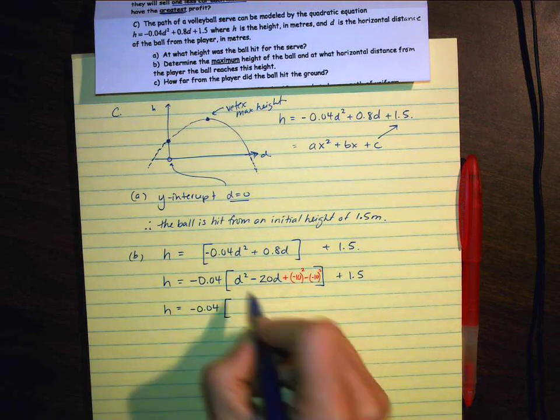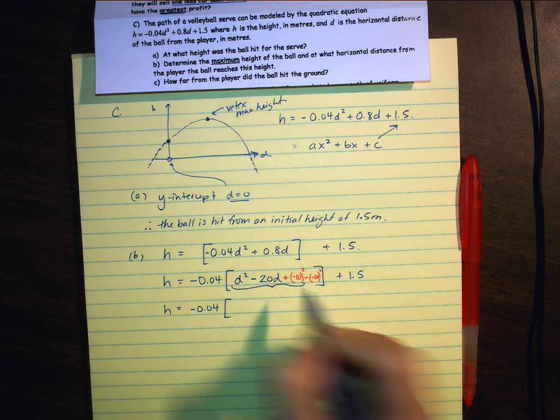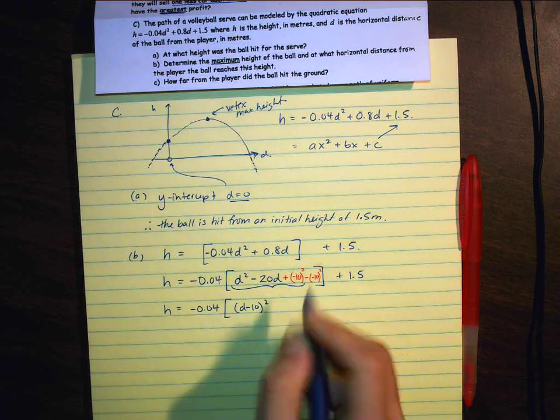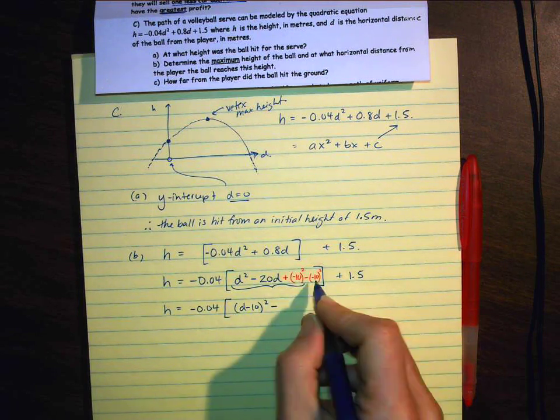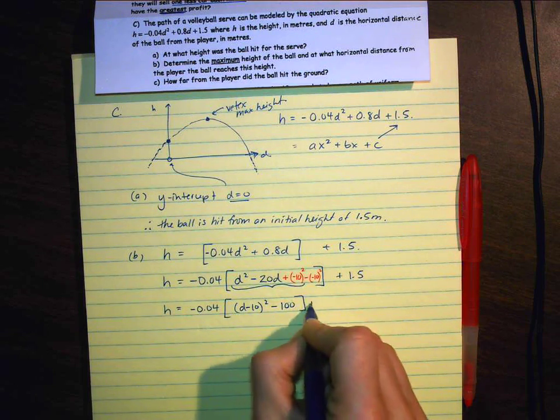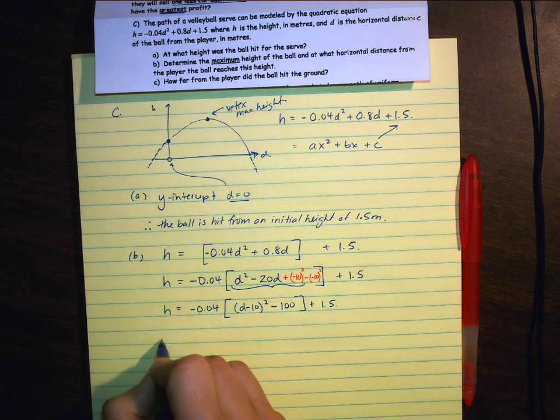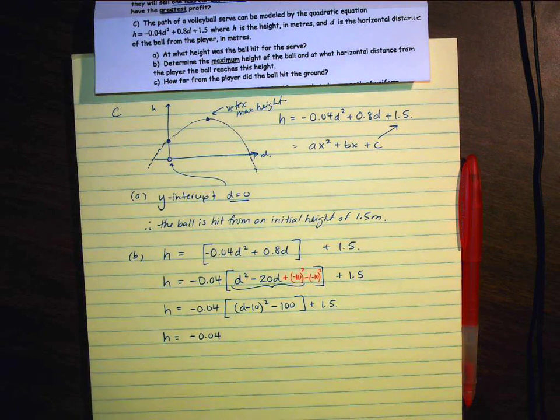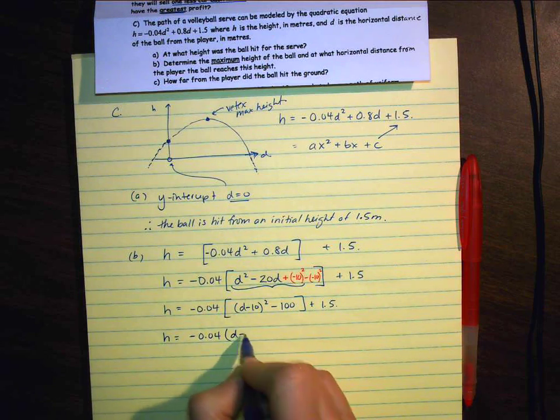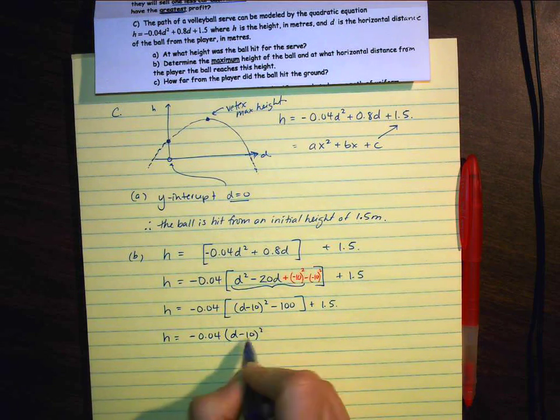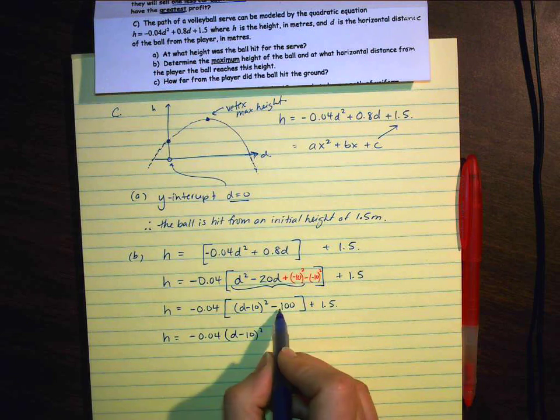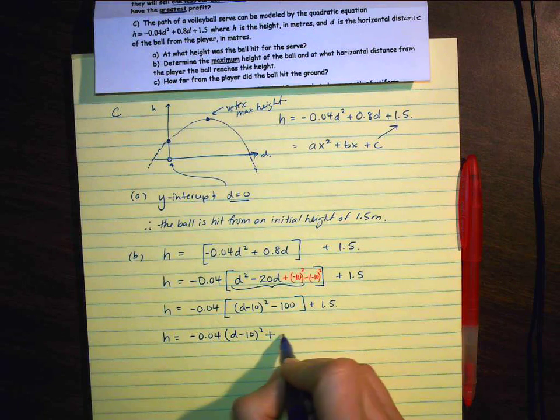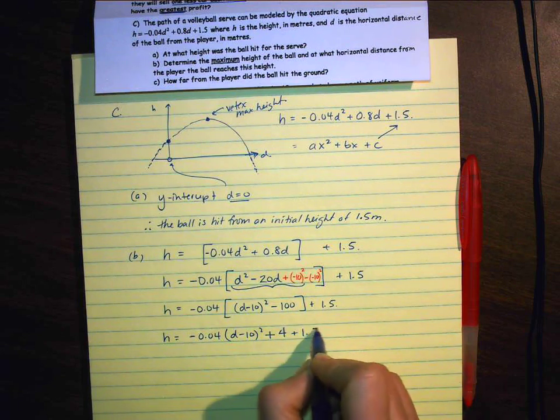I'm going to go ahead and finish completing the square. I'm going to take those first three terms. So that's going to be d minus 10 all squared. That's going to be minus 100 plus 1.5. Which is going to be... I'm going to expand this. So that will just be in front of that. And I'm going to multiply this. Negative times a negative will be a positive. 100 times that is going to be plus 4. Plus 1.5.